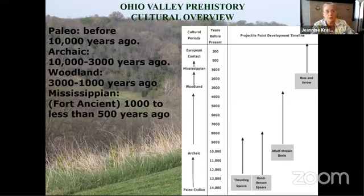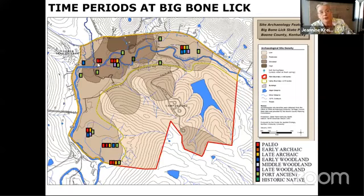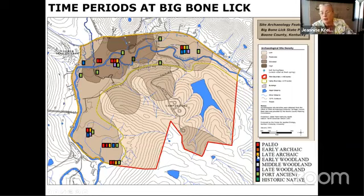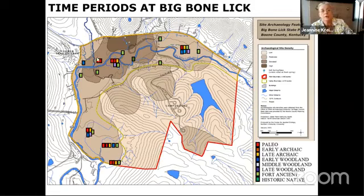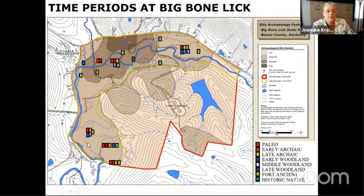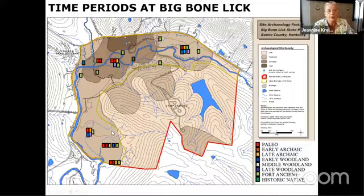Looking at the map, the bright red marks where Paleo period artifacts have been found at Big Bone. We have five locations in the park where Paleo spear points or artifacts have been found. Then we have Early Archaic, Late Archaic, and all the different time periods. We'll come back to this slide each time we start a new time period. There's an interesting area near the springs and another in the southern part of the park near where the creek turns south.